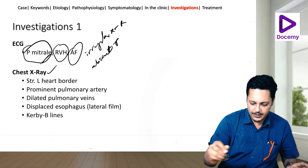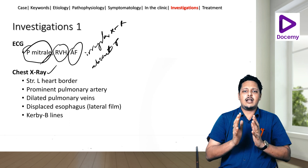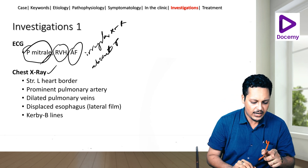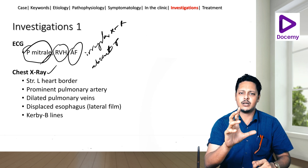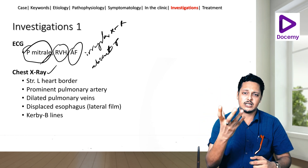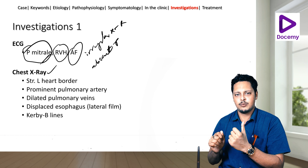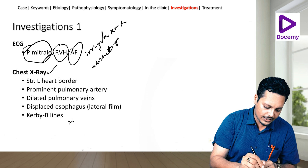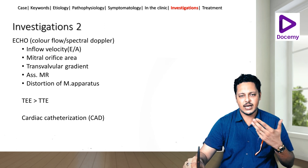Chest X-ray changes reflect LA enlargement. Straightening of the left heart border indicates an enlarged LA. Prominent pulmonary artery reflects pulmonary arterial hypertension. Dilated pulmonary veins with cephalization are seen due to congestion. In the lateral film, a displaced esophagus indicates posterior LA enlargement. Kerley B lines indicate interstitial edema.